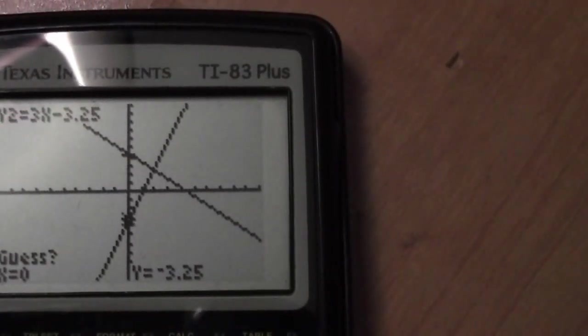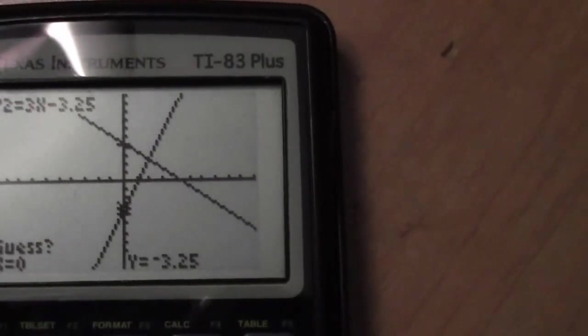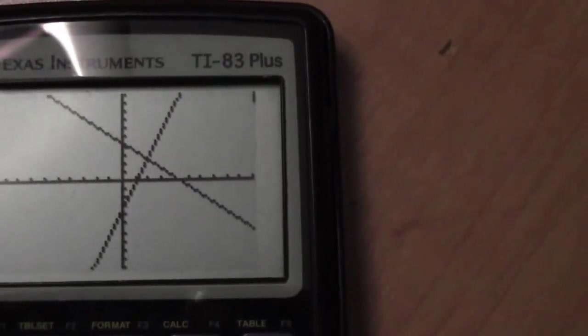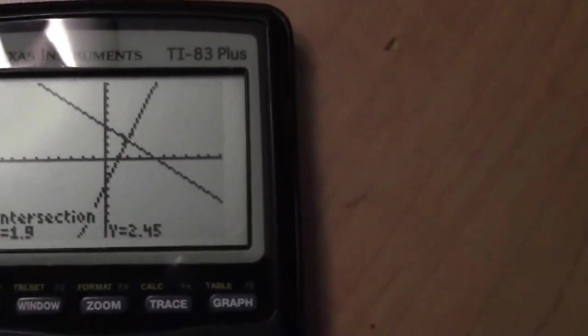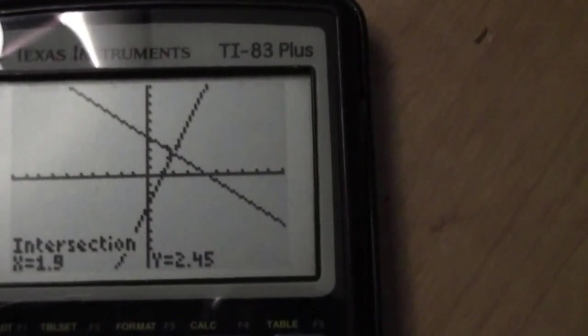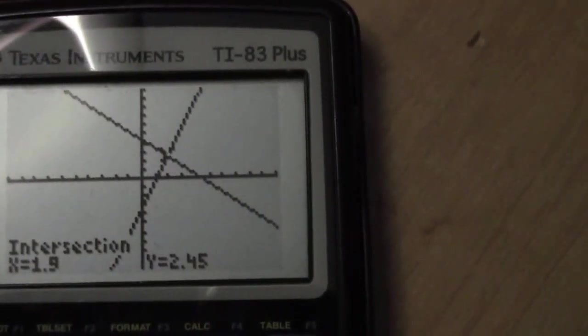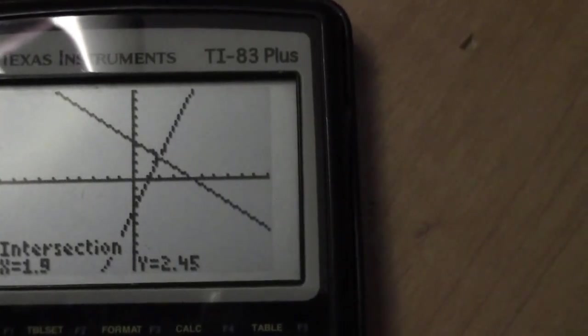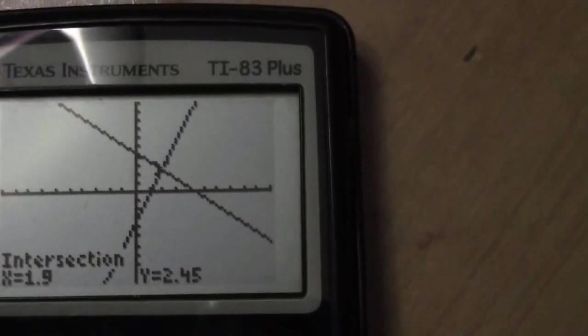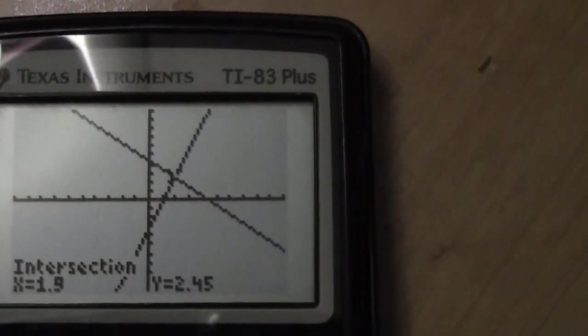The next thing you'll see is the word guess. When you see the word guess, you need to push enter one last time. Now what it gives you is the ordered pair as an answer where those two lines have intersected. So our ordered pair in this case is (1.9, 2.45). And that's the solution to that system of equations.